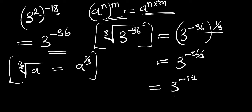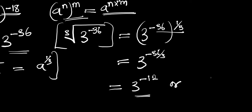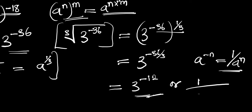So we have 3 to the power of negative 12 as our answer. We can also write it using the identity a to the power of negative n equals 1 divided by a to the power of n. So this can also be written as 1 divided by 3 to the power of 12, and this becomes the final answer. That is for this particular problem and that is for the video — thank you and goodbye.